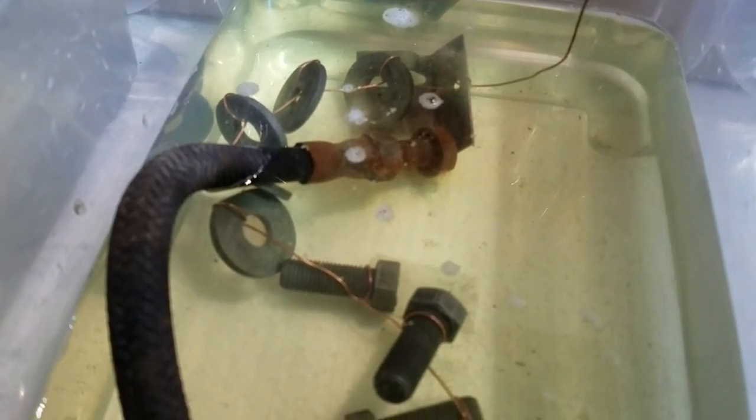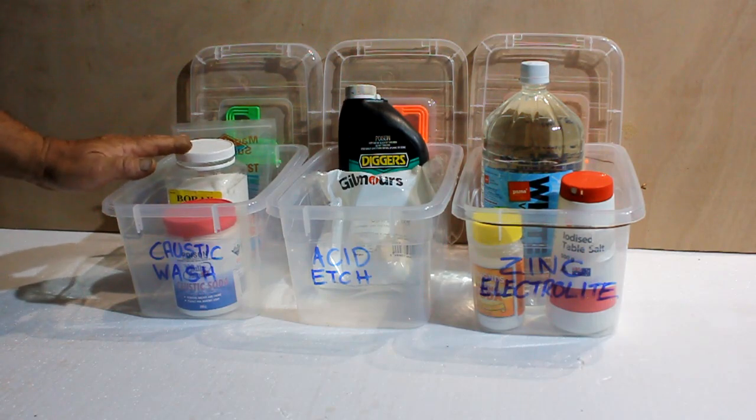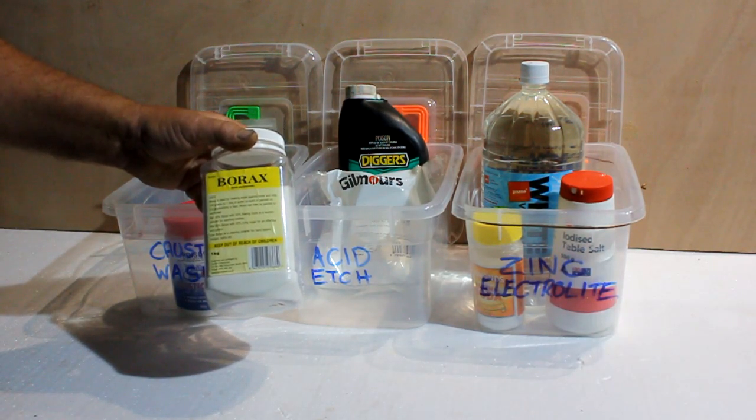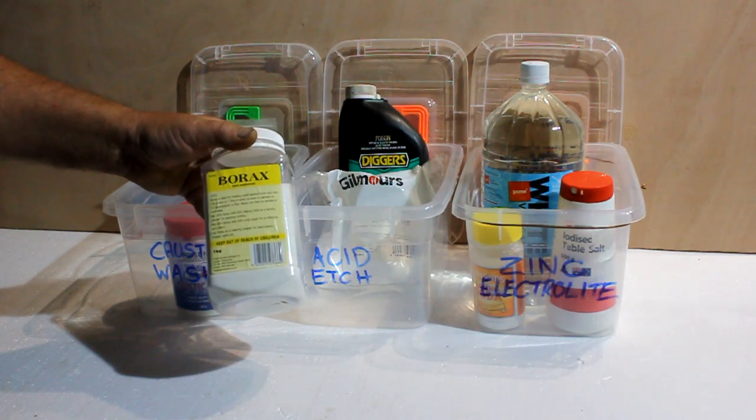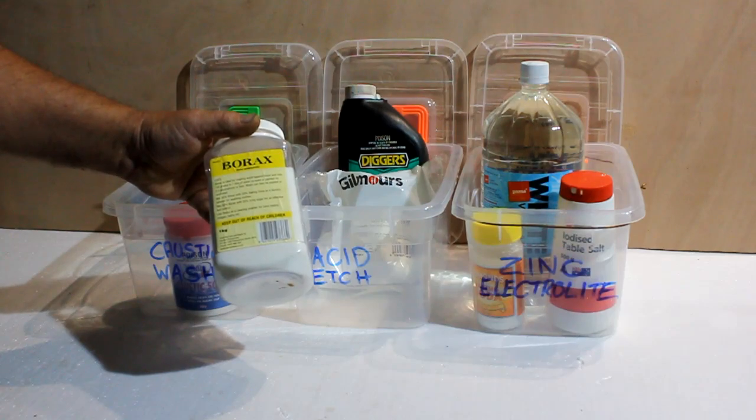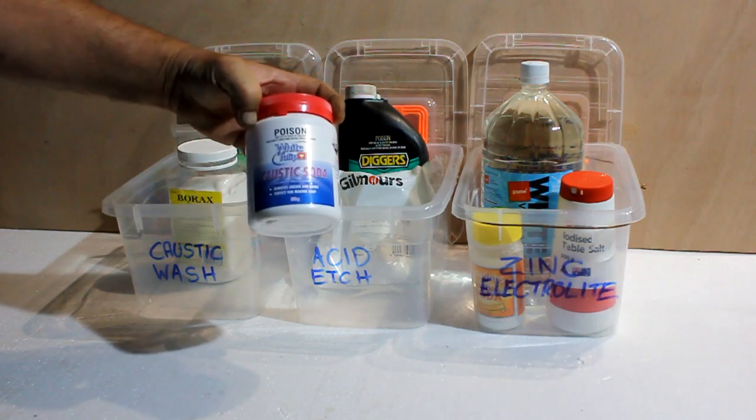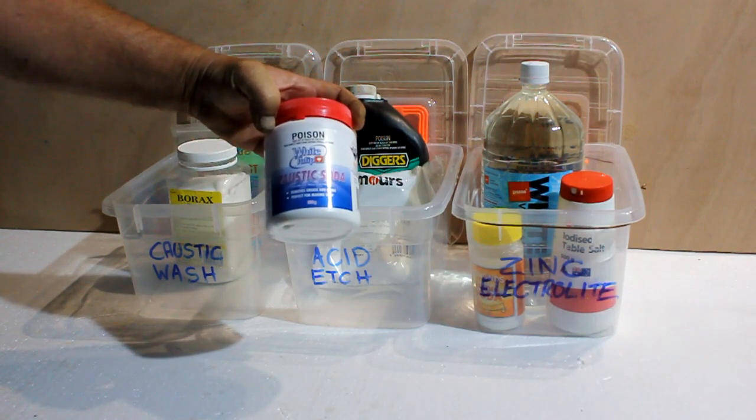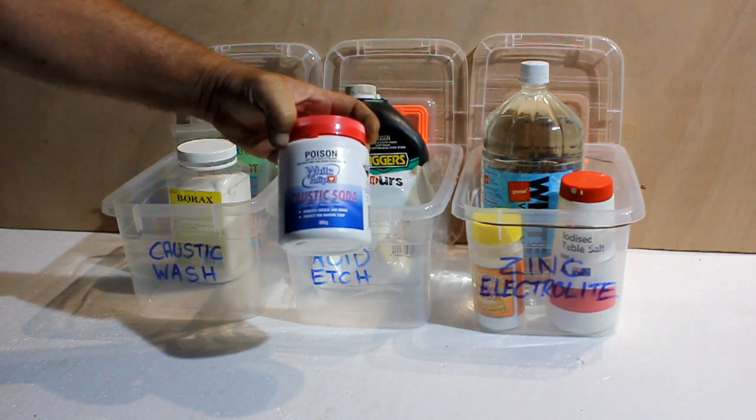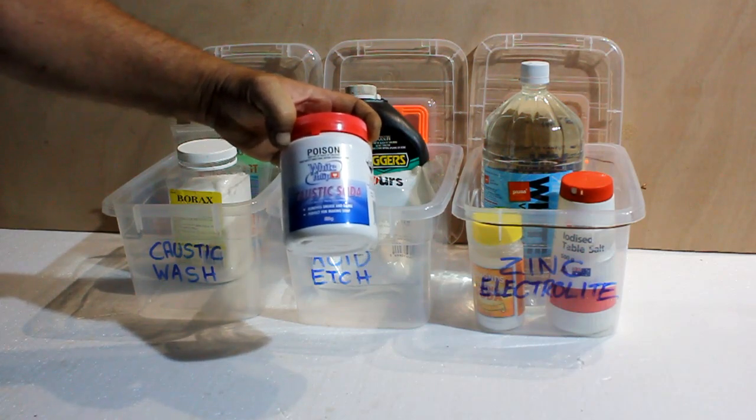The first thing we're going to do is clean the parts with a caustic wash and this can be done in two ways. Borax gives a nice gentle clean and will remove waxes and oils but it could take several hours. Caustic soda is a much more aggressive way of doing it and it will achieve the same effect in just minutes but you must wear hand and eye protection.